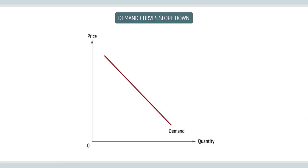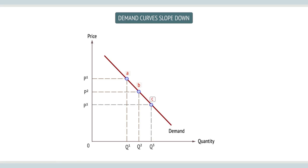The demand curve shows the relationship between price and quantity demanded. To show movements along the demand curve, we look at price changes: when there's a rise in price, there will be a contraction in demand; when there's a fall in price, there will be an extension. As you can see in the figure with points A, B, and C — a rise in price moves from B to A, showing a contraction; and a movement from B to C shows an extension.